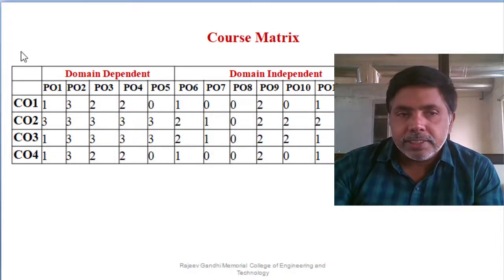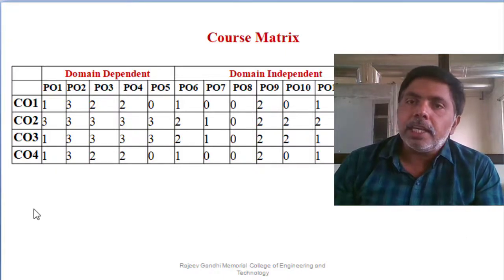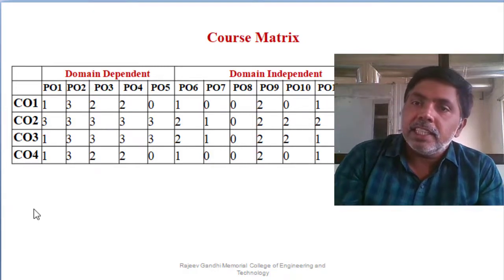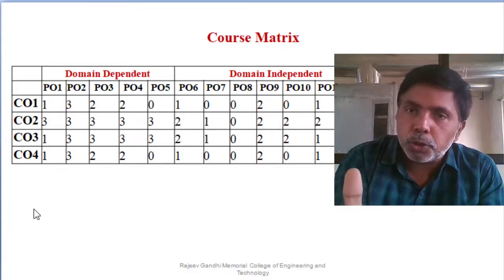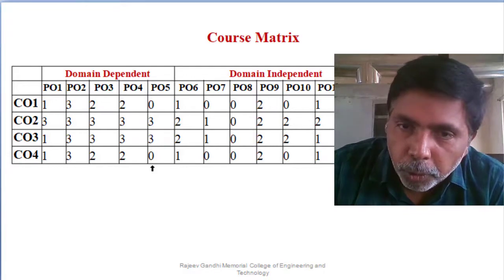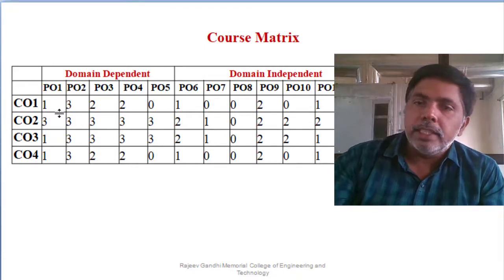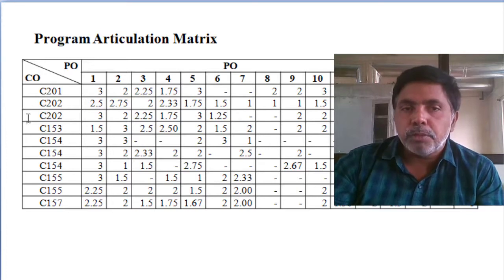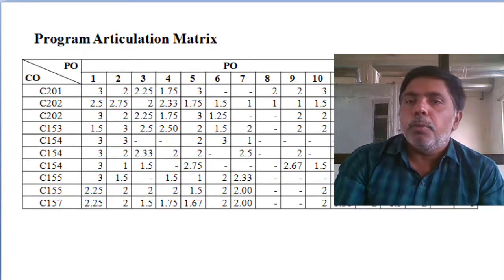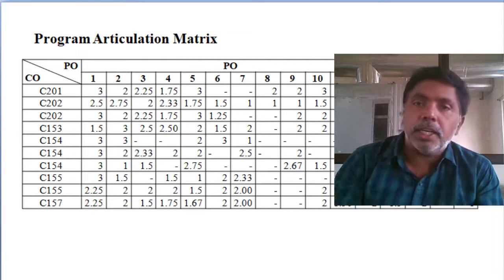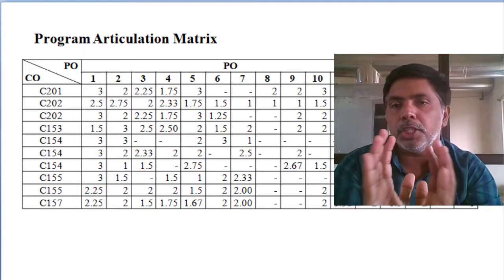This course matrix summarizes our objective, and by that objective the student can achieve the outcomes from the subject. If a student achieves the course outcomes, we can see how many program outcomes they fulfill and at what percentage. We mention the scaling in the SAR data book.